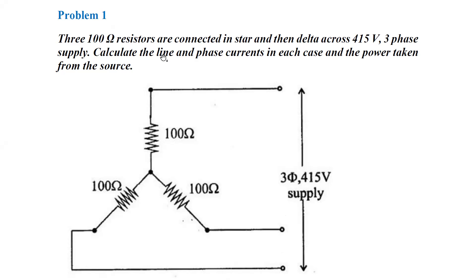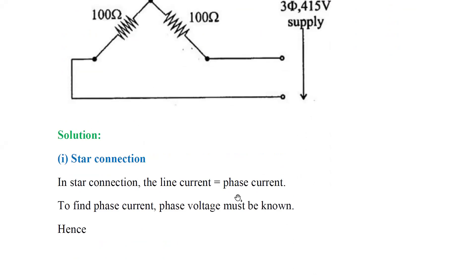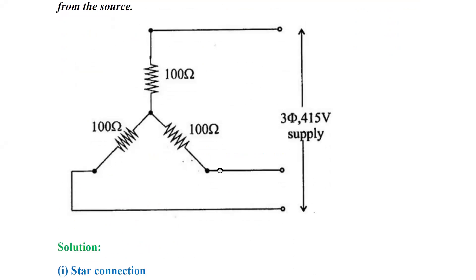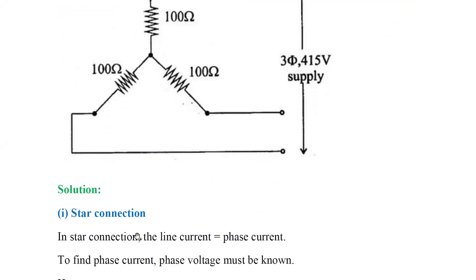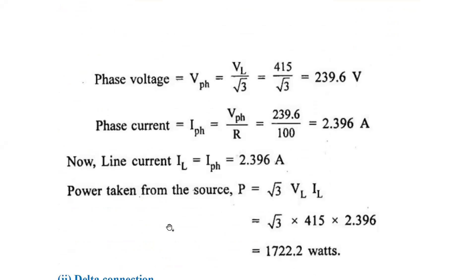For the star connection solution, we need to calculate line current and phase current. For star connection, the line current is equal to the phase current. To find the phase current, we need to find the phase voltage. Phase voltage V_phase is equal to VL divided by root 3. VL is given as 450 volts, so 450 divided by root 3 gives 239.6 volts as the phase voltage.